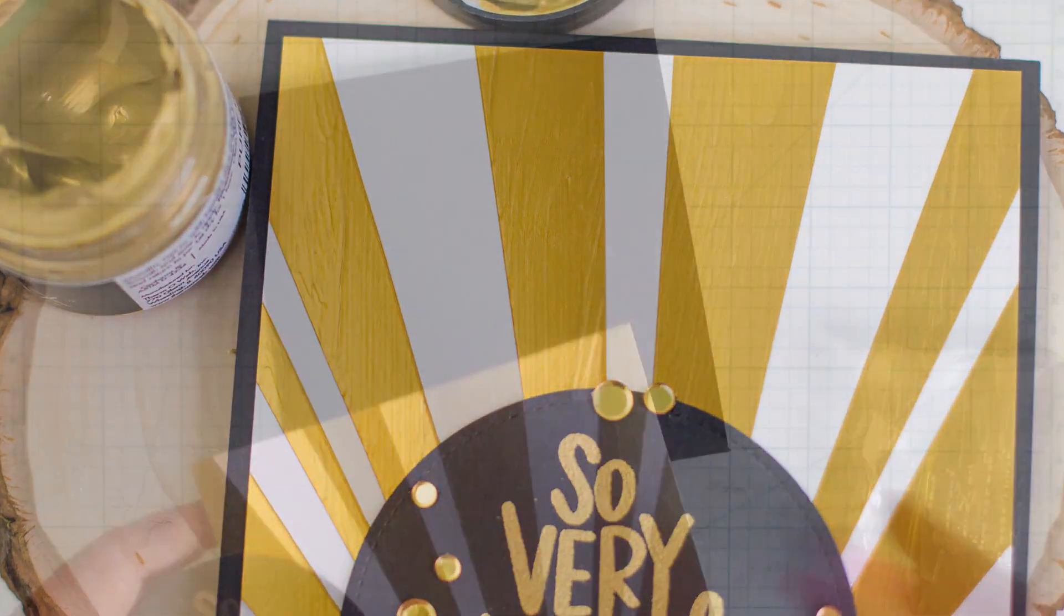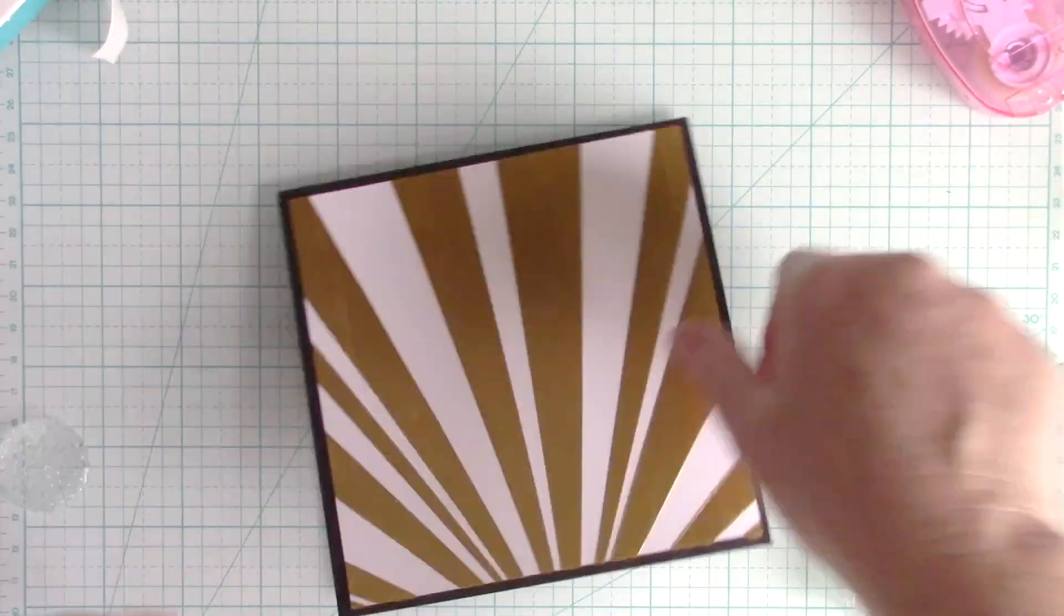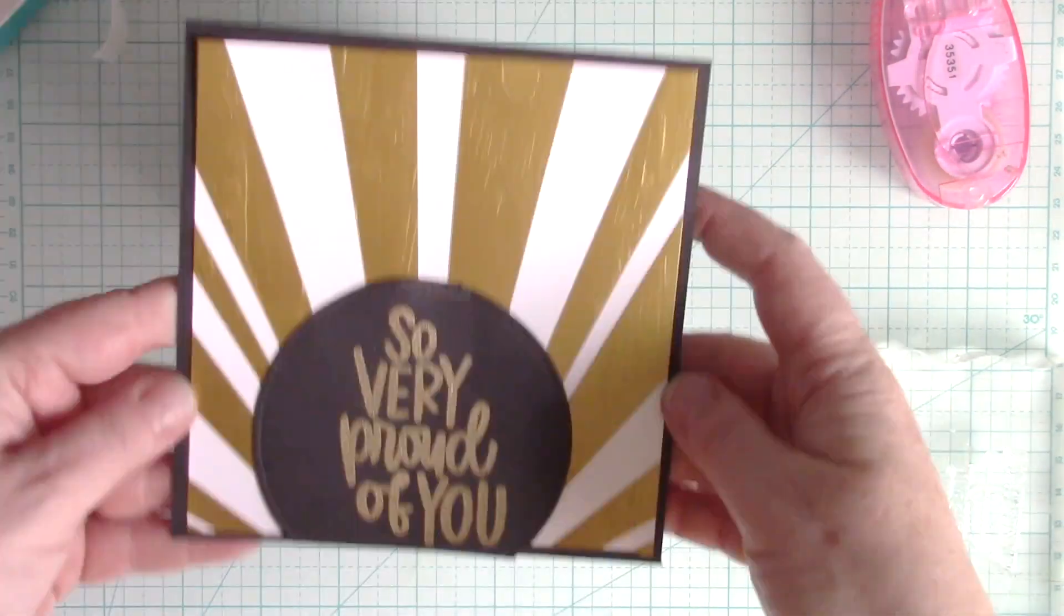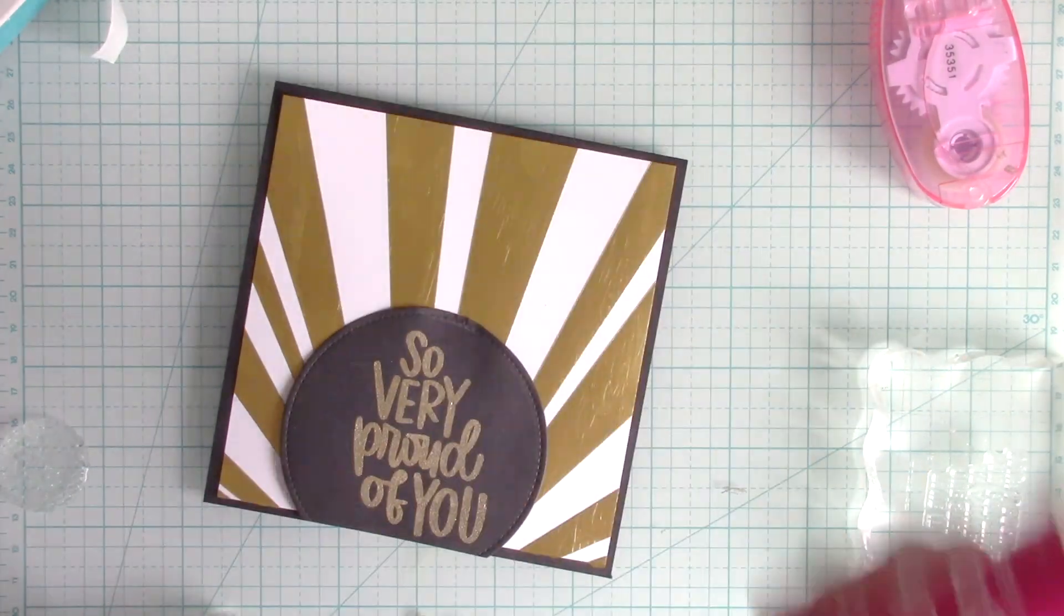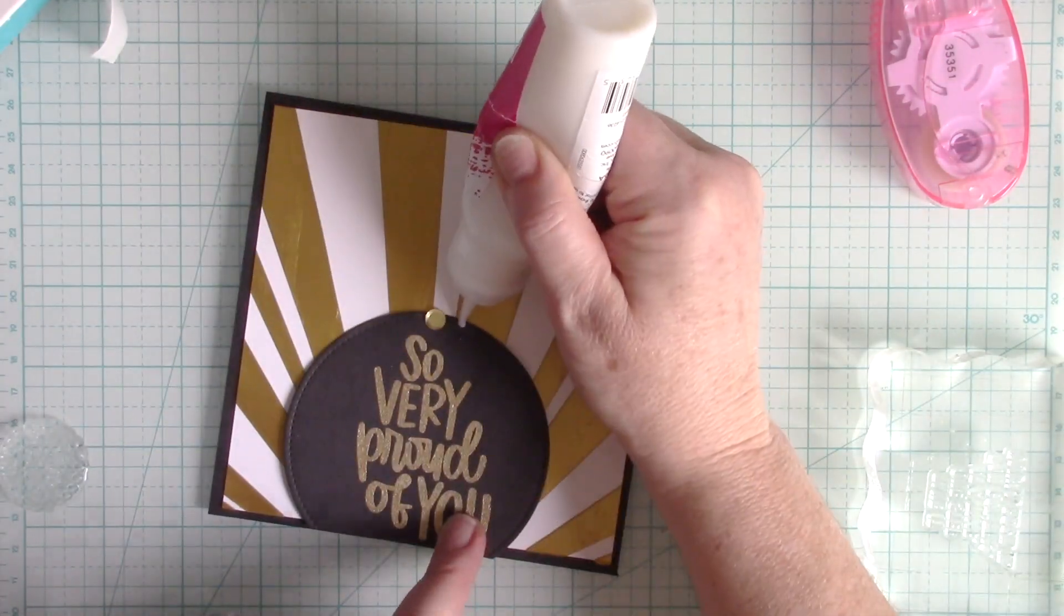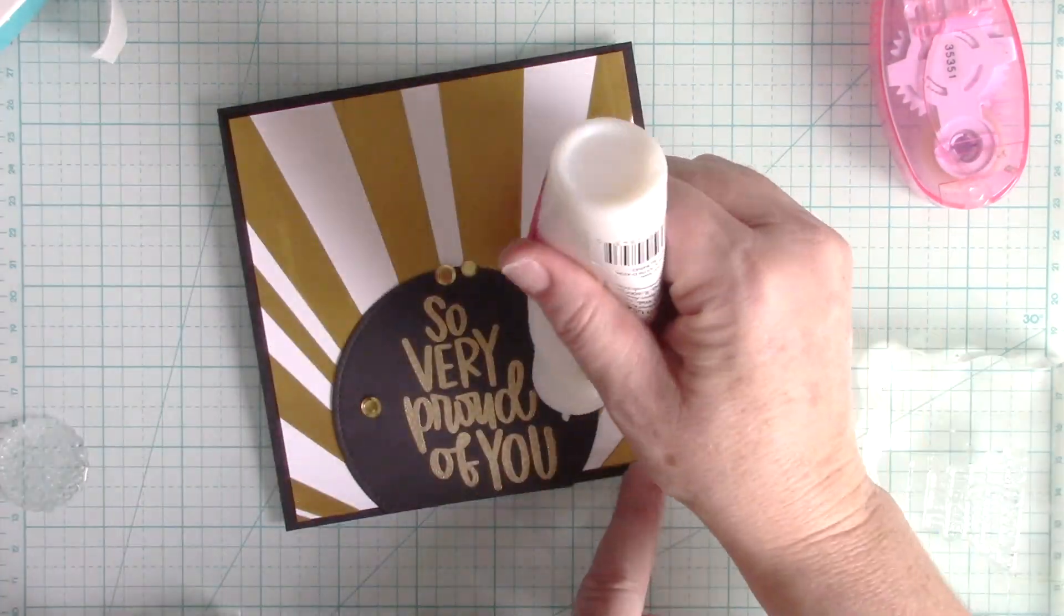For the last card I used the Raise the Roof Stencil, the pure gold metallics, and I cut it down to about five by five, mounting it on some black cardstock that's five and a quarter by five and a quarter. I have a stitched circle die cut of black cardstock with my sentiment heat embossed in gold. I cut off the bottom so that it could be flat to the bottom of the card.